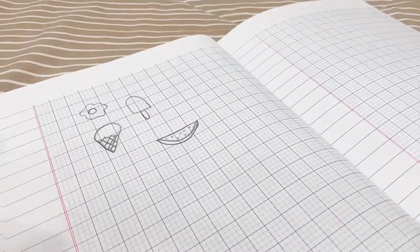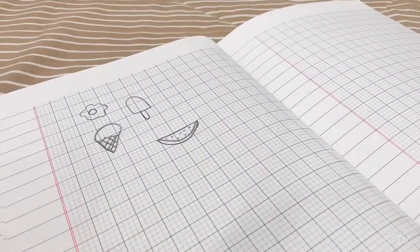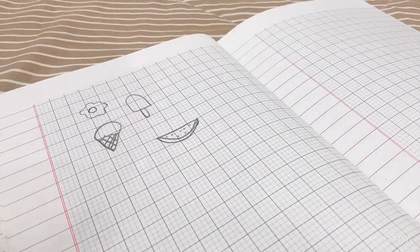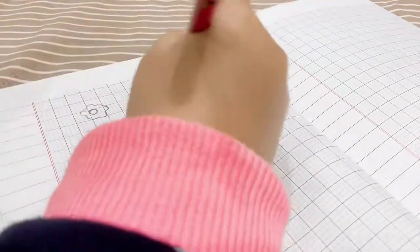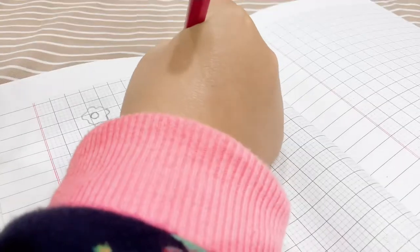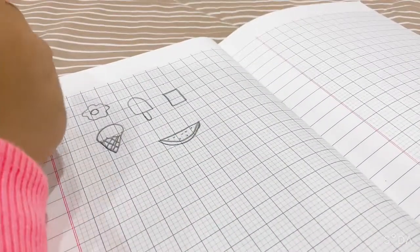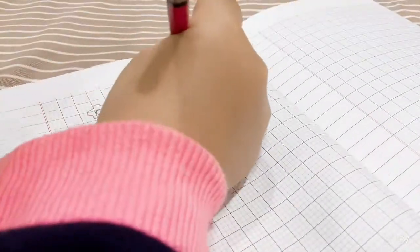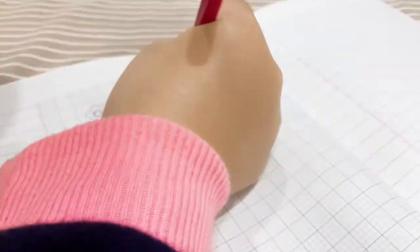Ta-da, watermelon is finished. Okay, the next one will be chocolate. Chocolate is easy, a lot of kids know, but I'm not sure. I'll just teach you. First draw a rectangle, then draw sections like a door. Looks like chocolate pieces.